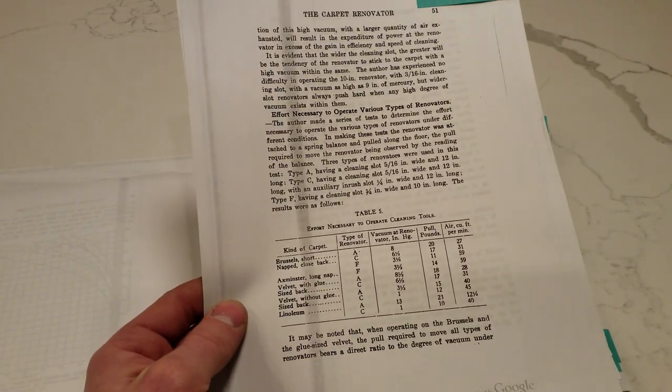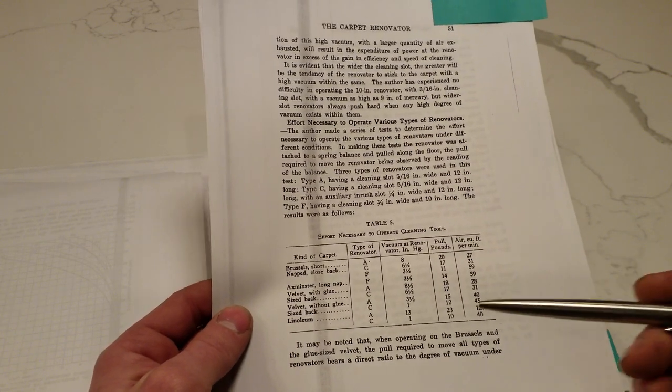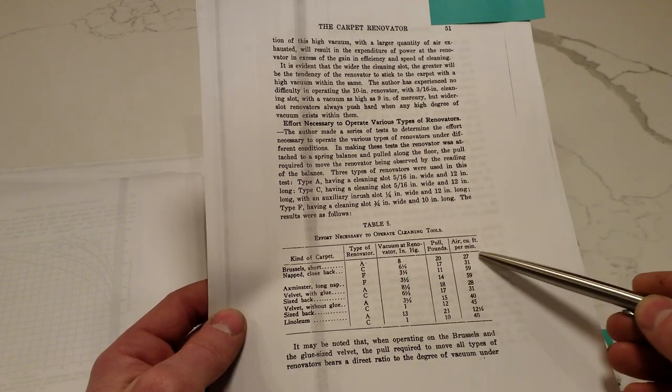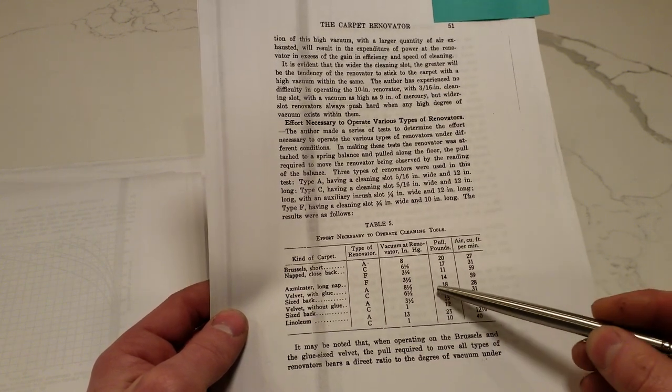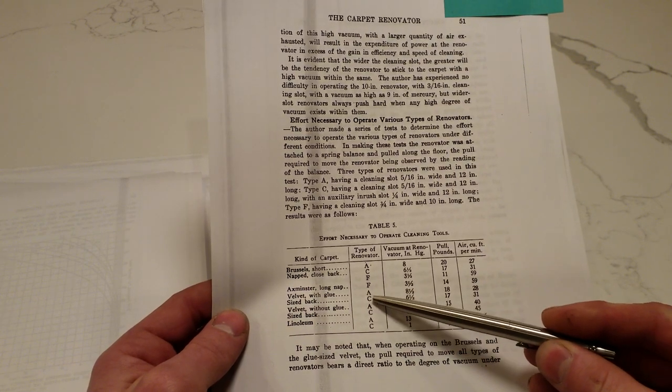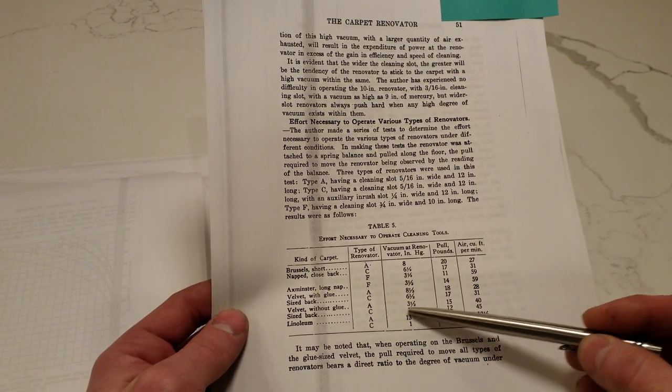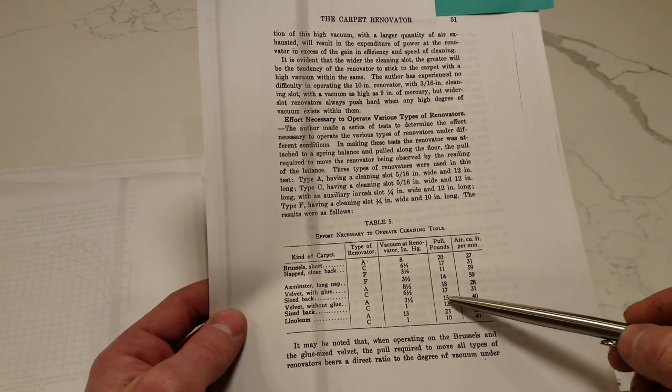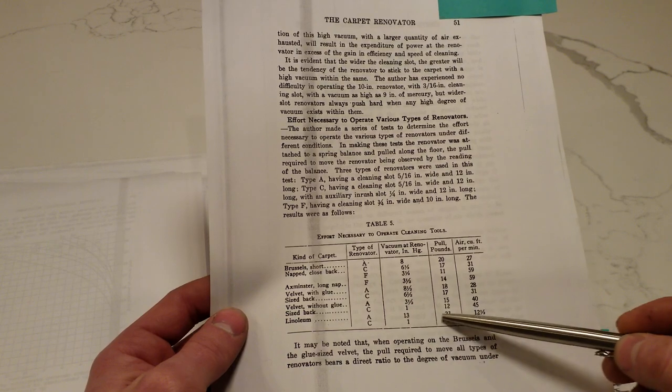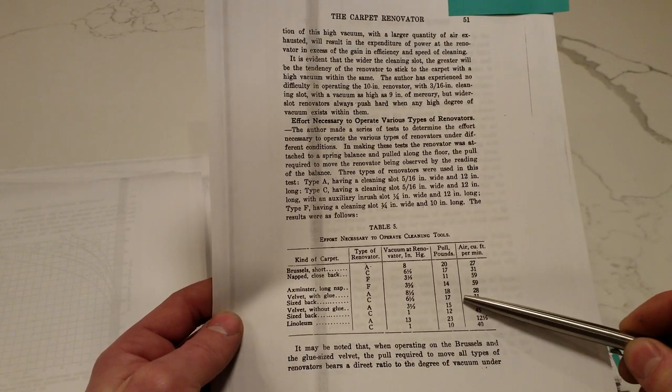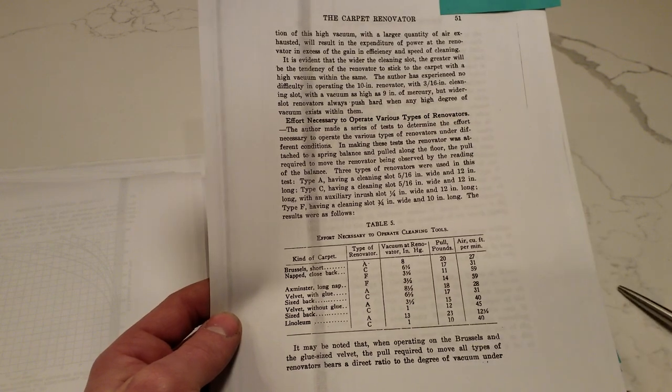They measured the effort necessary to operate the cleaning tools. Vacuum at renovator. Pull in pounds. Air in cubic feet per minute. And you can see the type A renovator, which was basically like a carpet cleaning wand you would see today, it took a lot of force to move over the carpet. Type F renovator operated with a lower vacuum system. Even though it was moving more air, it was quite a bit easier to move around.